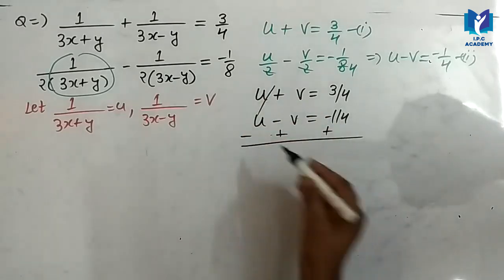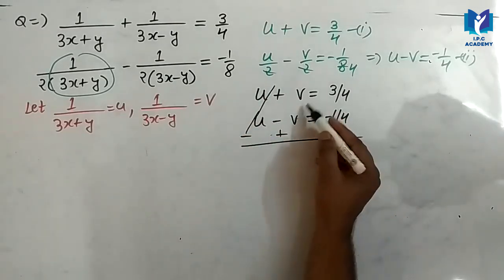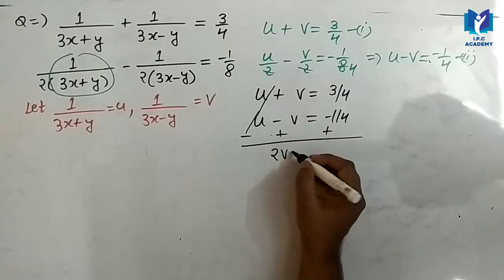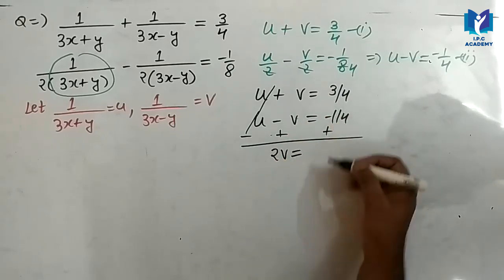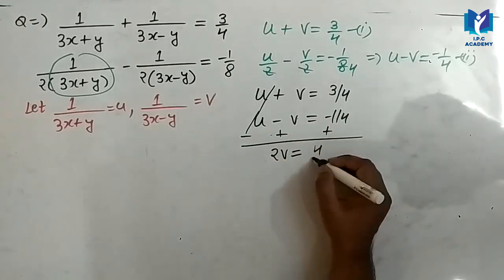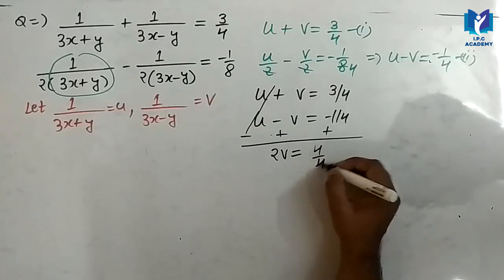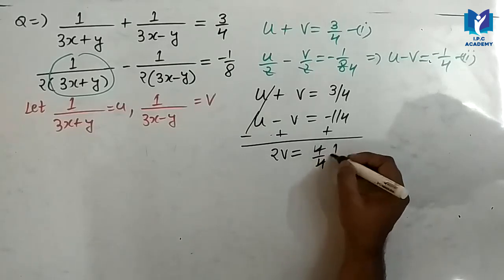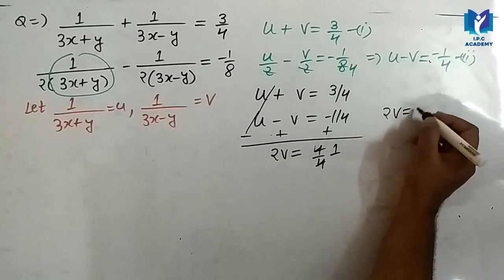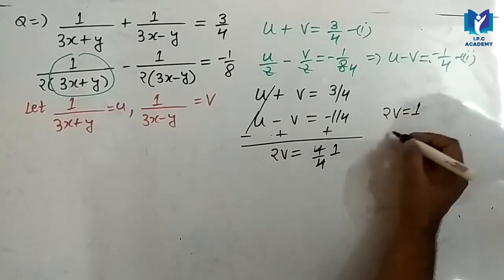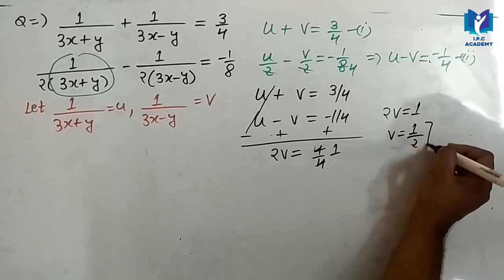U will be cancel out. Then v and v, जो की twice of v होगा, 3 upon 4 plus 1 upon 4. यह 4 upon 4, यह कट के answer क्या चाहेगा, 1. So, here twice of v is equal to 1. So, the value of v will be 1 by 2.